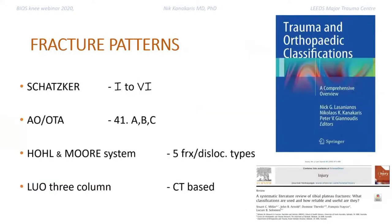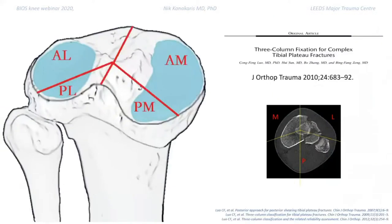As far as fracture patterns, the Schatzker, AO, and Moore classification systems are quite old but useful. Most notably, the LUO classification is based on CT scans and gives a better understanding of the geography of the injury, also allowing us to understand which approach would be useful to reduce and fix the fractures.